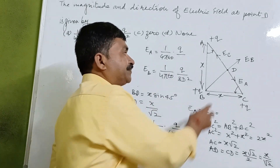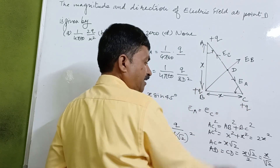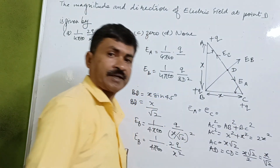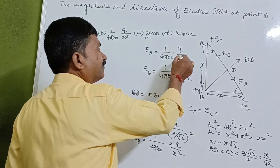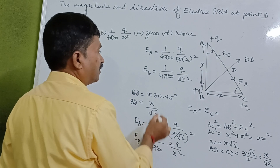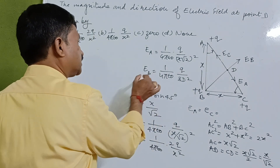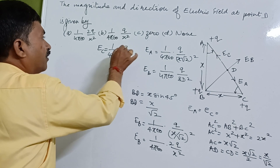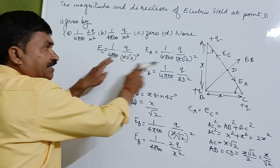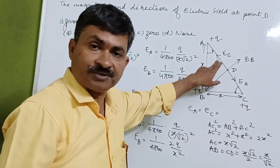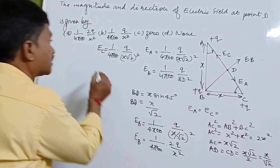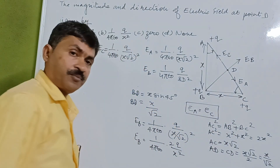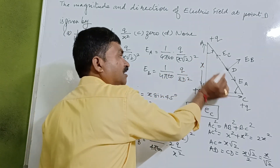If we go through the distances, this will be X and this will be X. So we have calculated that AC will be X upon root 2, and since D is the midpoint, AD equals CD equals X upon root 2. EA will be given by 1 upon 4 pi epsilon naught into Q upon (X root 2) squared. Similarly, EC will also equal 1 upon 4 pi epsilon naught into Q upon (X root 2) squared. Both are equal in magnitude and acting in opposite directions, so they will cancel each other.